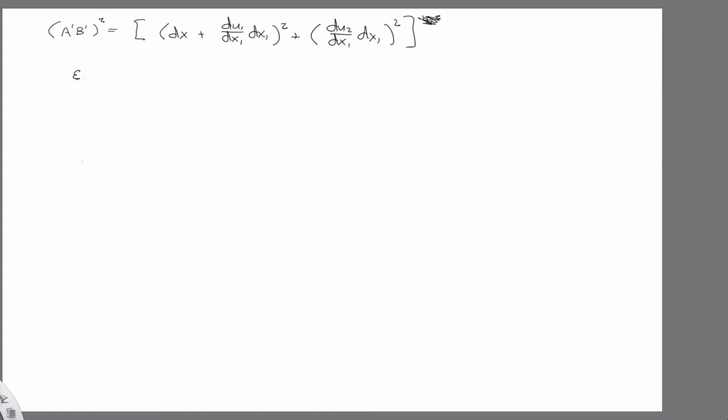So then if I have the original equation, I had the strain in the x1, a prime b prime over dx minus 1. So I'm just going to move this to the other side of the equation. So that's a prime b prime equals strain in the x1 plus 1 times dx.